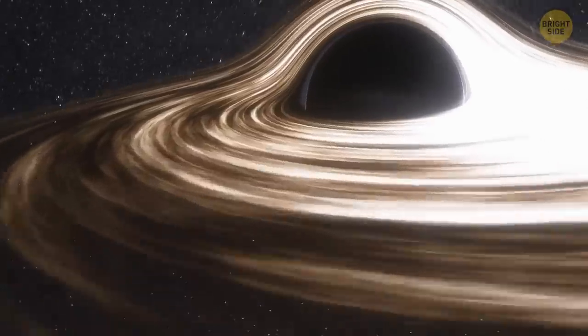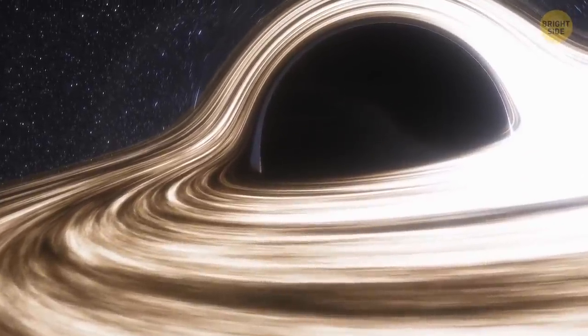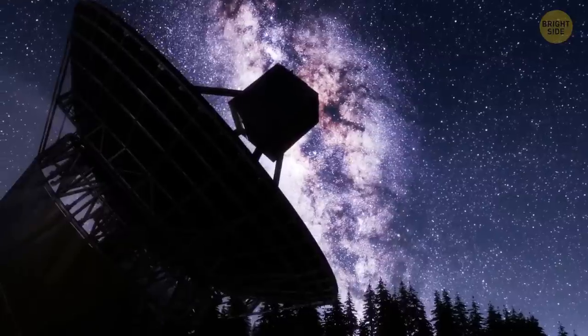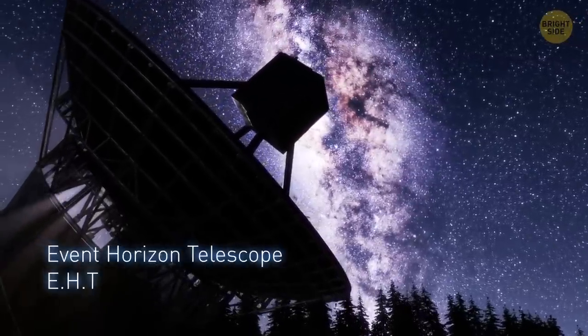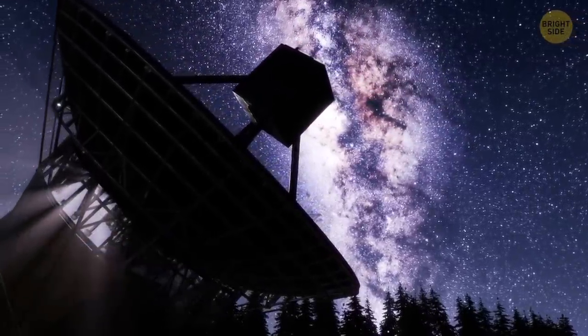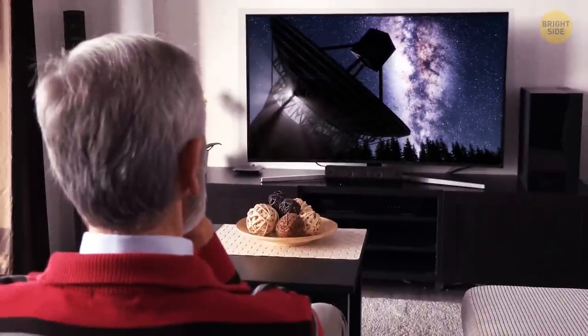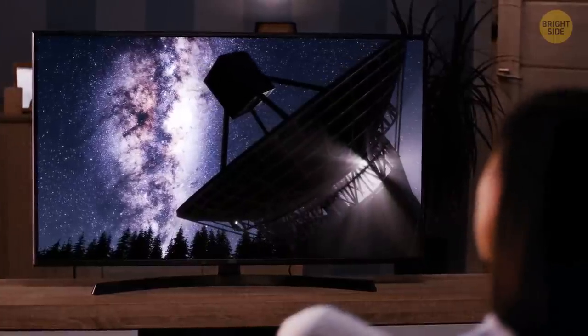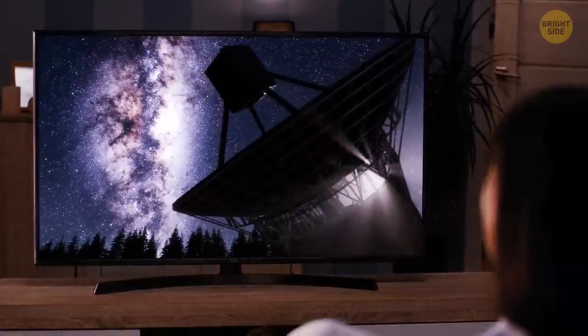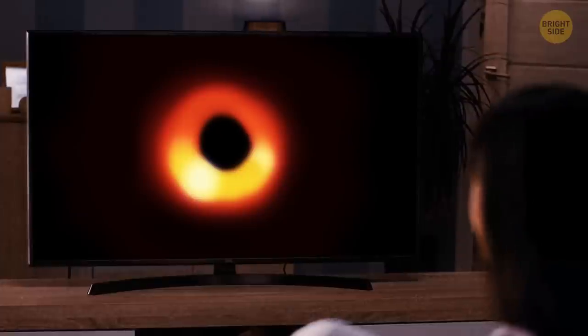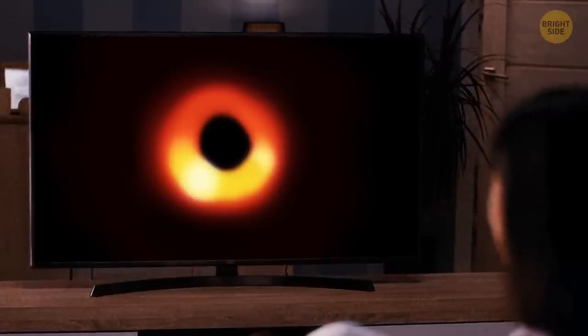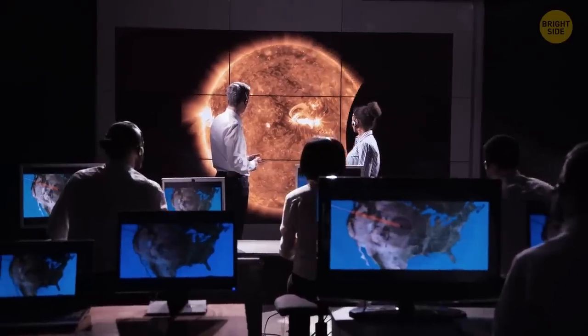M87 has a supermassive black hole at its core. The black hole was photographed using data collected in 2017 by the Event Horizon Telescope, EHT. It was announced excitedly to the world in 2019. In March 2021, the EHT collaboration revealed a polarized-based image of the black hole for the first time. It was a pretty exciting event. It was the first time that a black hole had been captured.